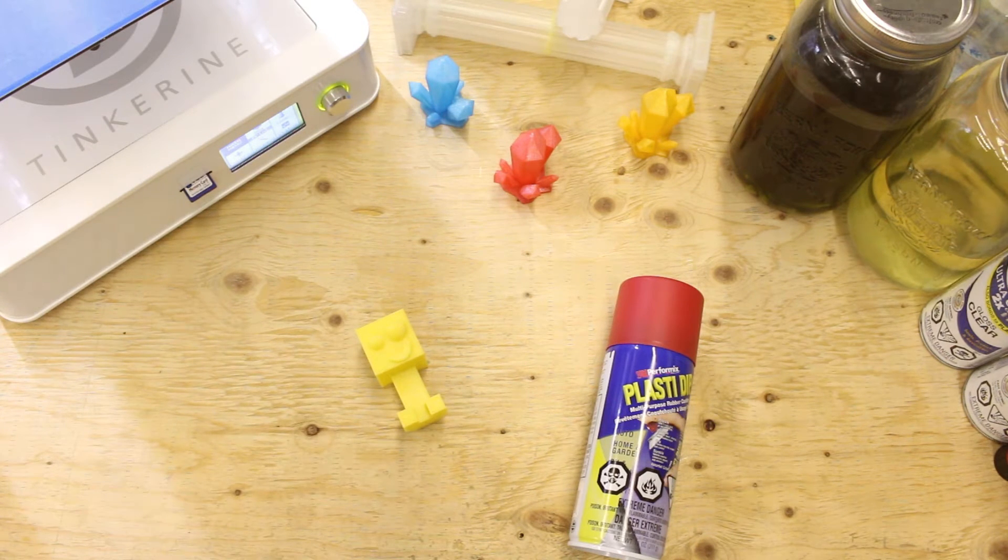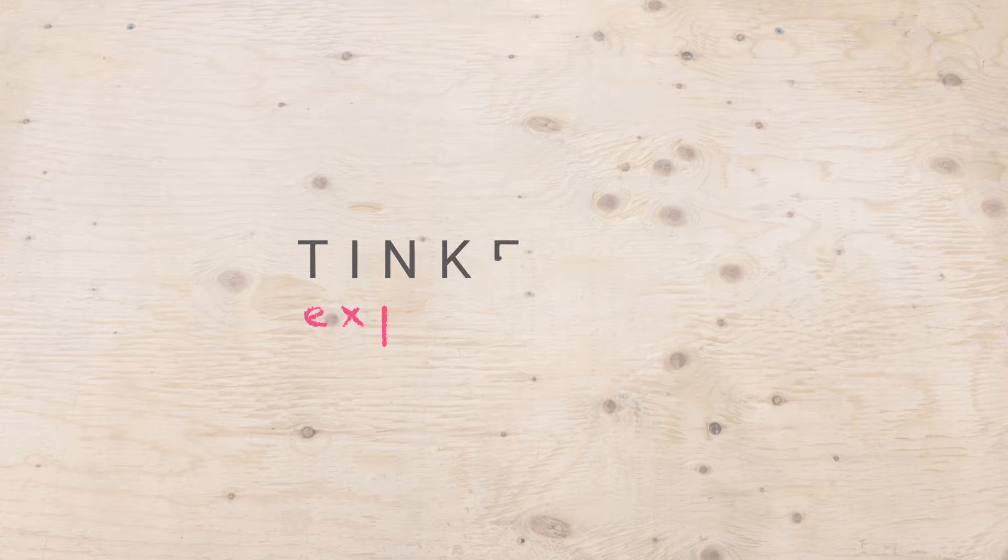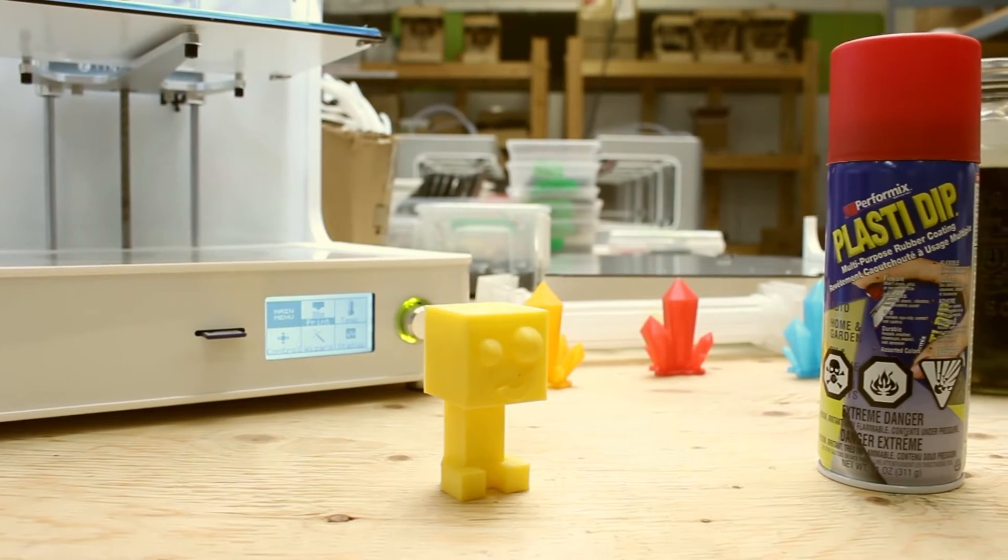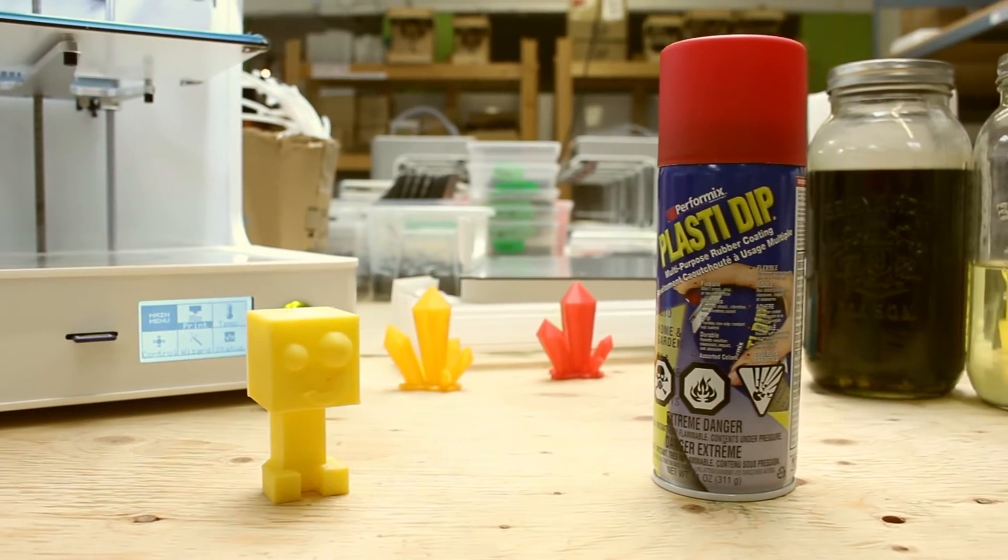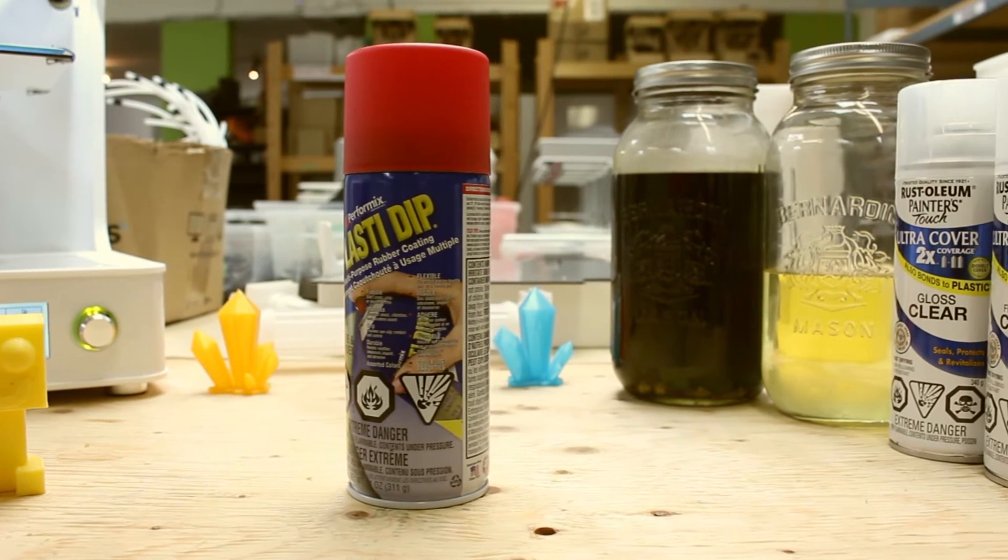You can find plastic dip at your local hardware store for roughly $10. We will do a total of two coats on a model with a 30 minute gap in between coats for the first one to dry as advised by the manufacturers.